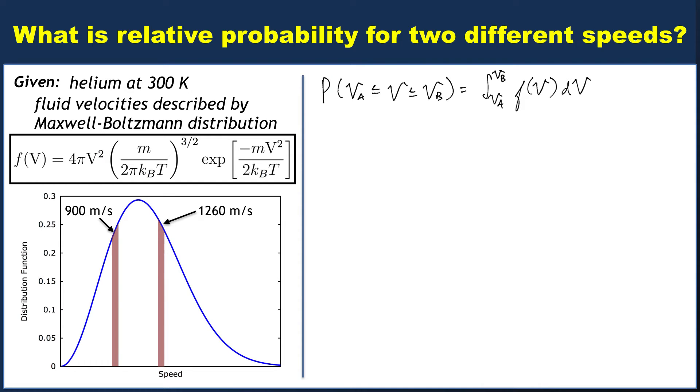And we can, under the particular circumstances that we choose Vb and Va values such that their difference is much, much less than the square root of 2kT over m. Under those circumstances, we can discretize this integral, by which I mean that we turn that differential element dV into a difference between Vb and Va.